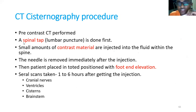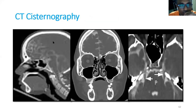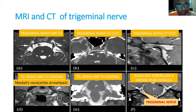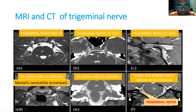CT cisternography is a technique where contrast material is introduced into the spinal canal, and you can see the cisterns, cranial nerves, ventricles, and brainstem. This is the cisternogram. Using the FIESTA sequence, you can see the cisternal part of the trigeminal nerve clearly. You can identify the conflict point where the superior cerebellar artery compresses the trigeminal nerve, where you need to deliver 80-90 Gy.